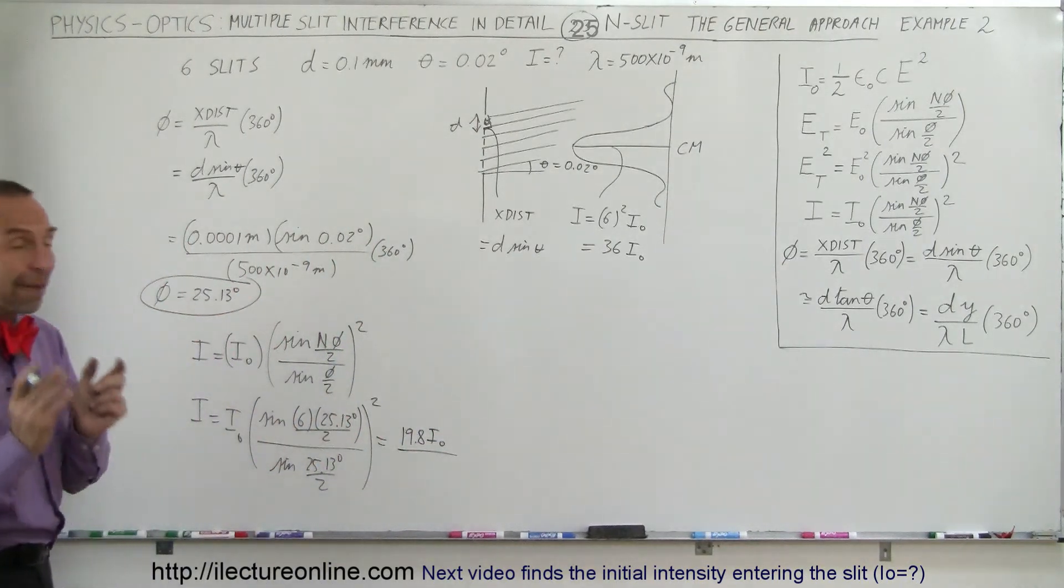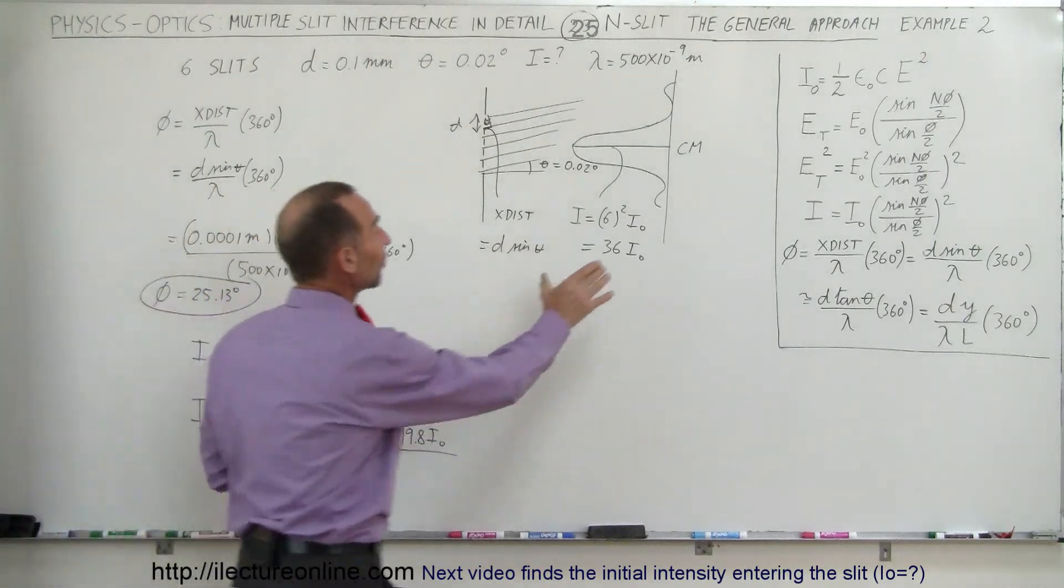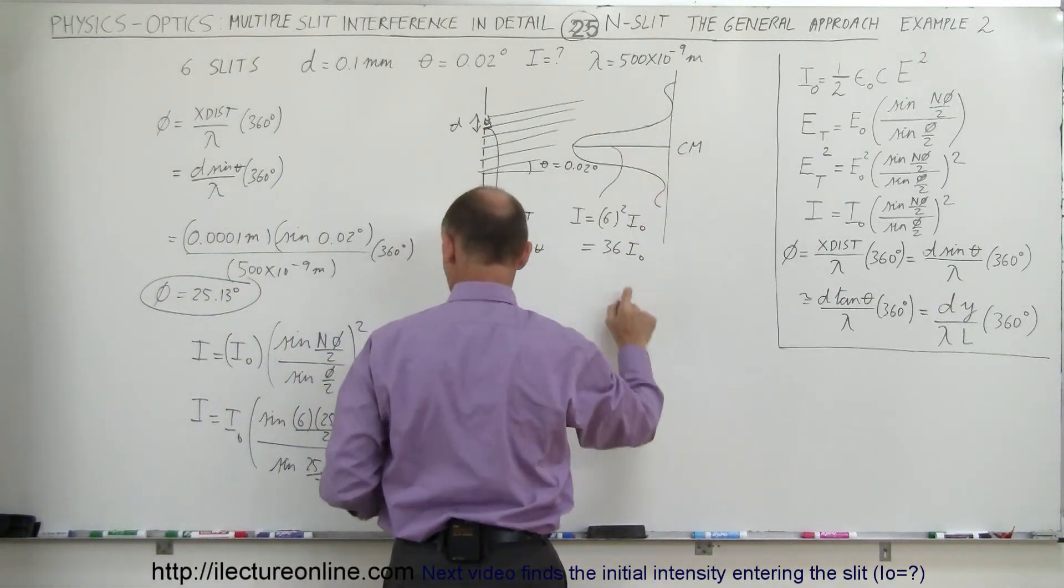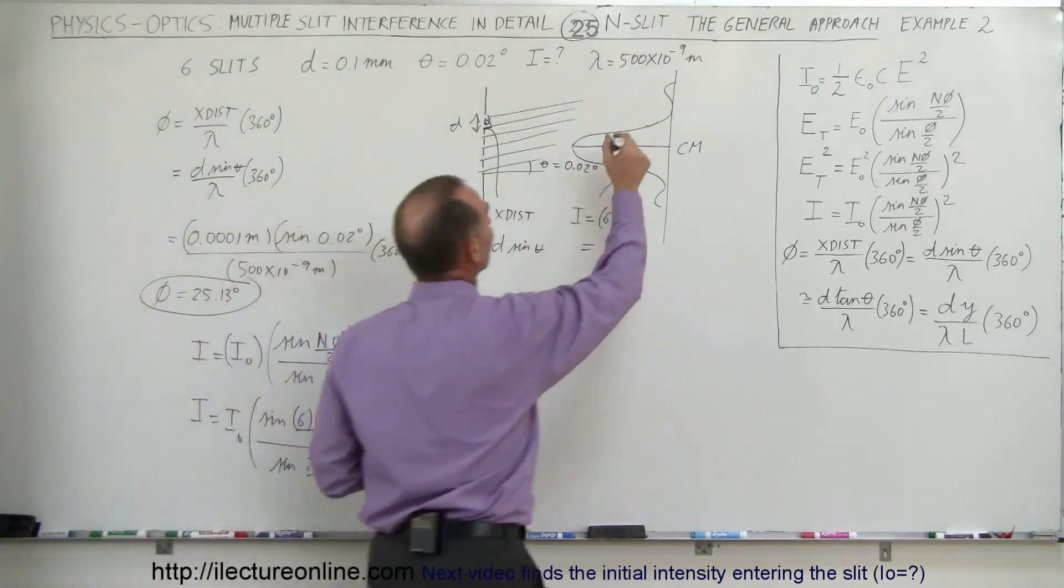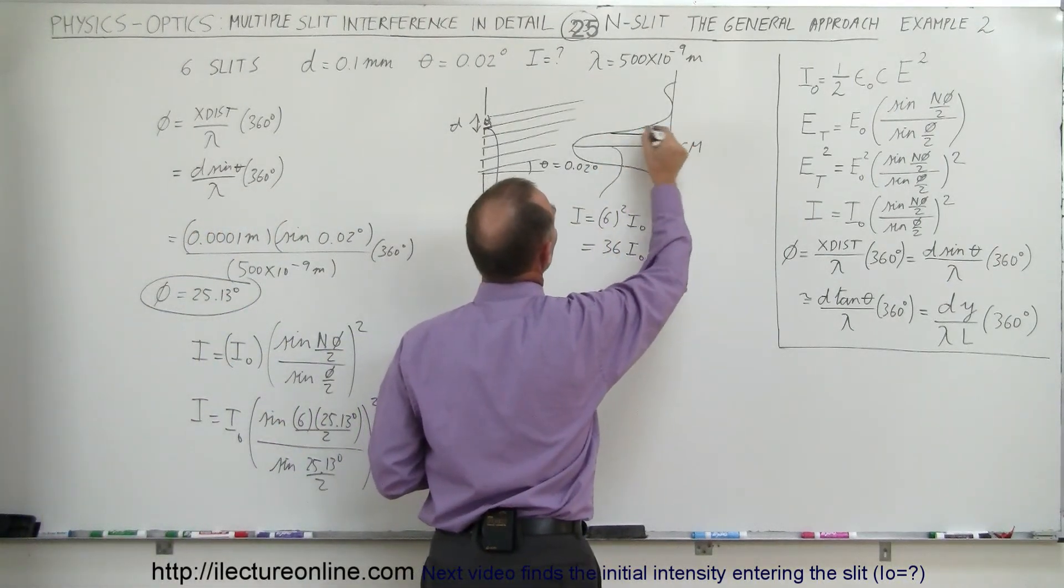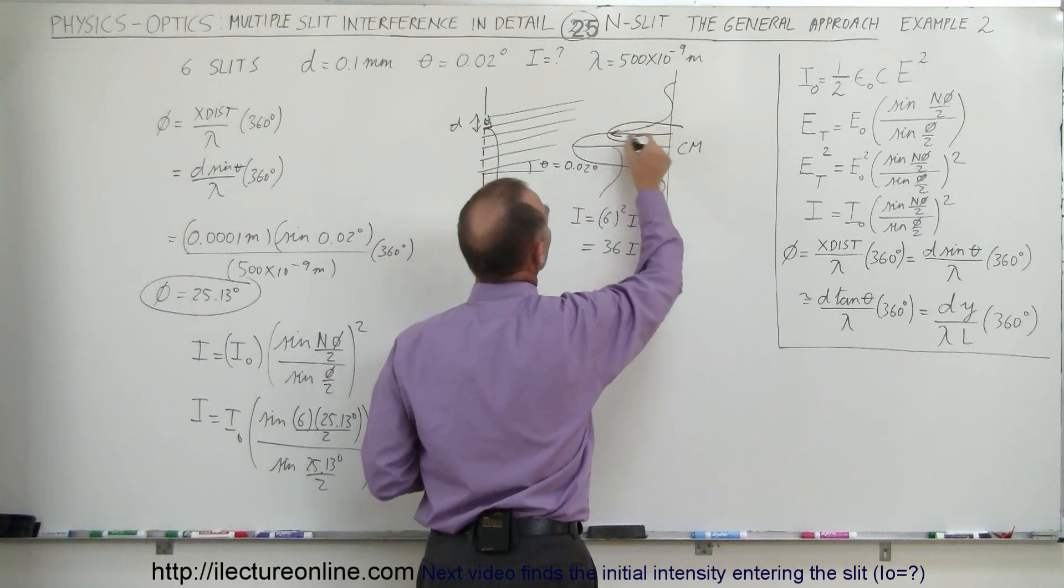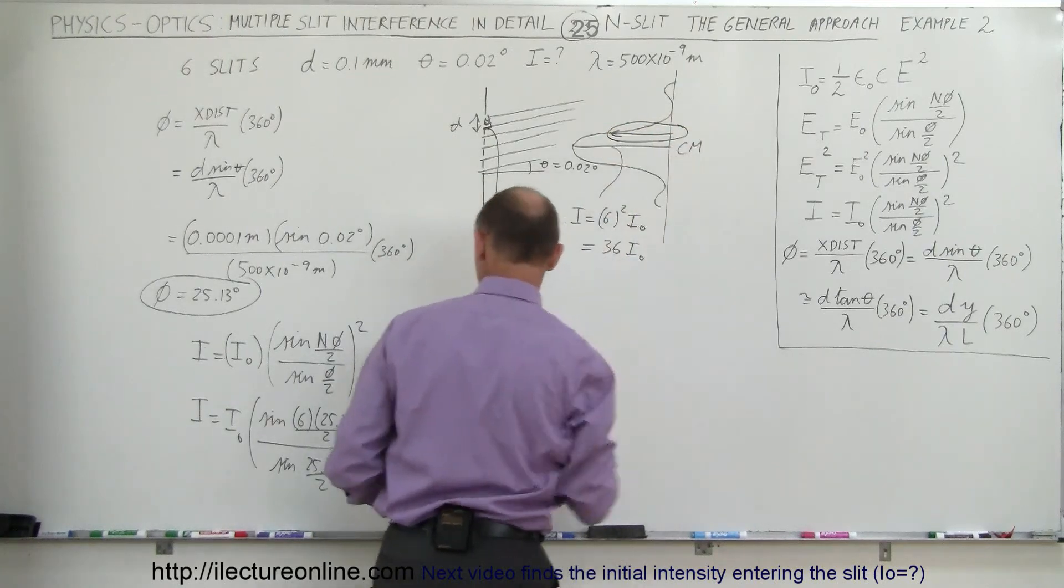So that would be equal to 19.8 times I₀. Okay, notice that the magnitude of the intensity at the center of the central max is 36 I₀, so this would be a little bit more than 50% of that...